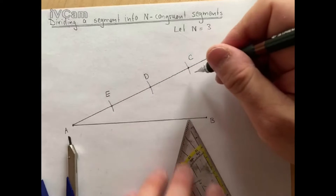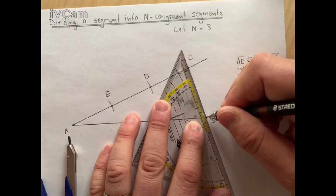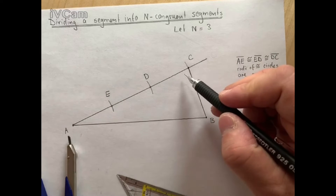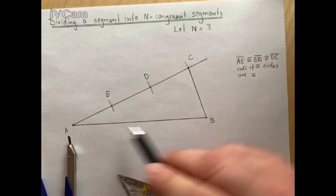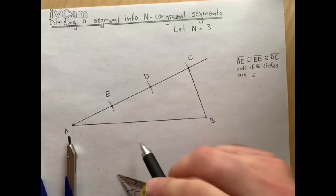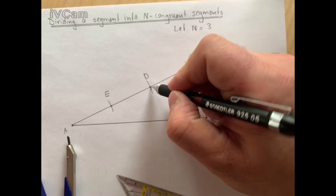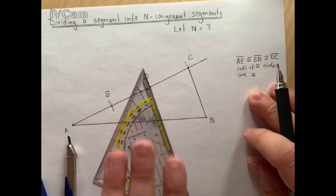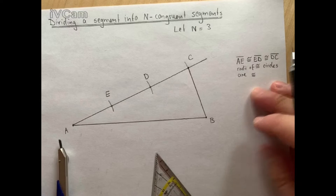The next step is to connect point B and C so that we form triangle ABC. Our goal is to use the copy angle method — we want to copy the angle created by segments AC and BC here. Basically, we want to copy angle ACB over to point D and to point E, so that we draw lines that are parallel.